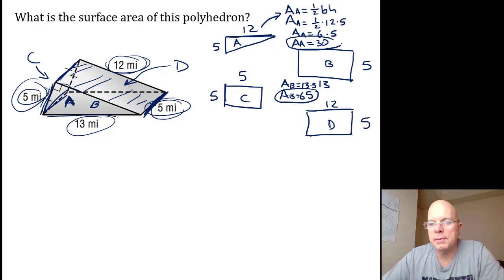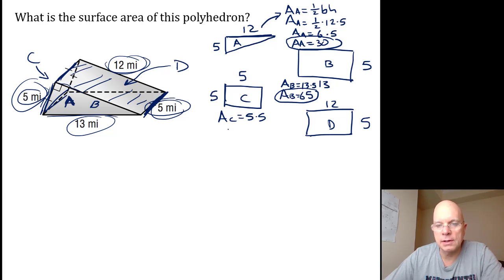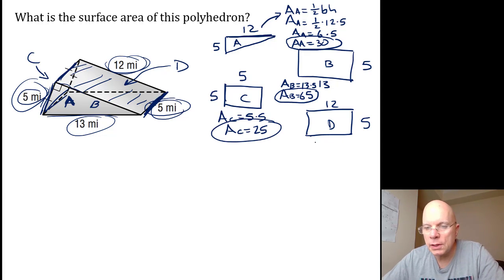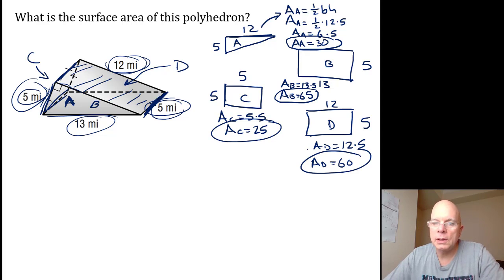The area of face C, the square, is 5 times 5. The area of face C is 25. The area of rectangle D is 12 by 5, which is 60.